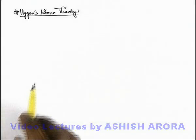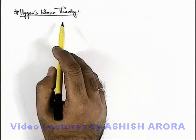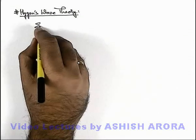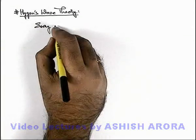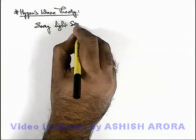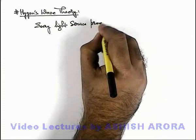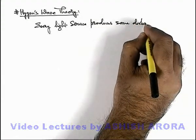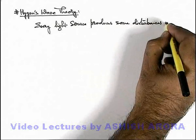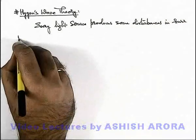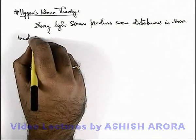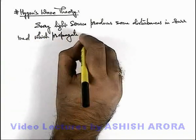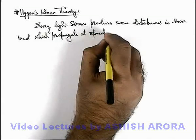Let's discuss another theory explaining the energy of light, that is Huygens' wave theory. This theory explains that every light source produces some disturbances in the surrounding medium, which propagate at the speed of light.